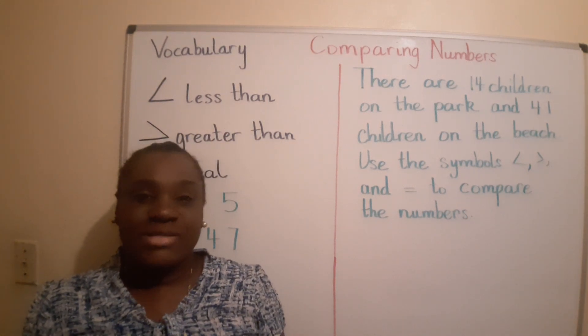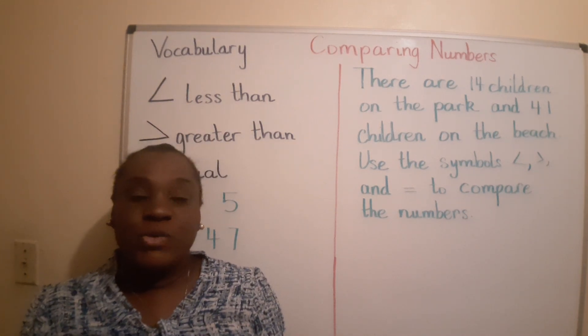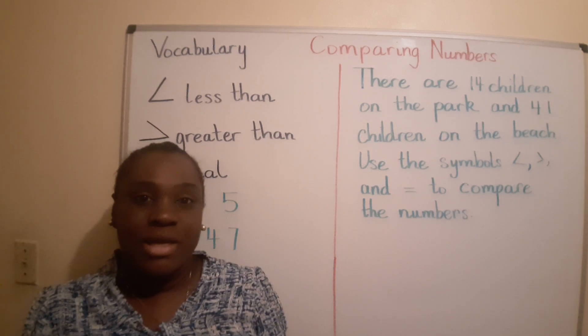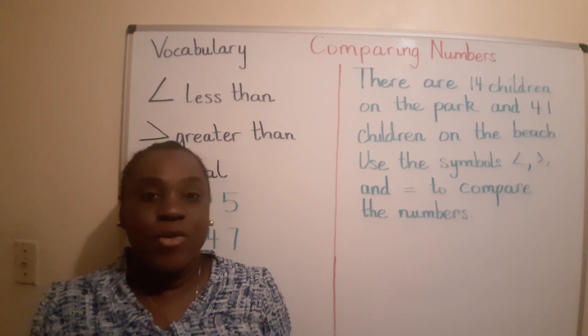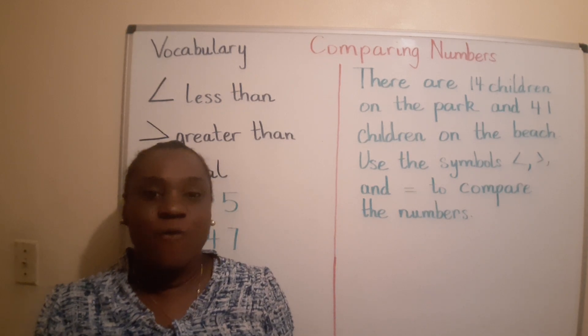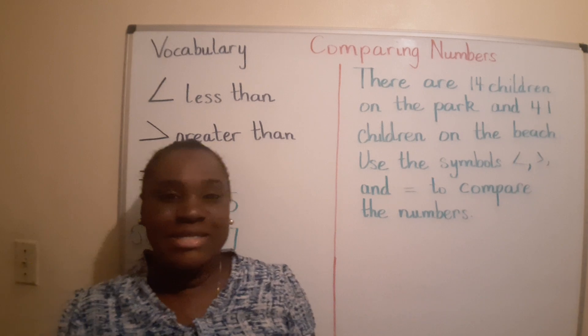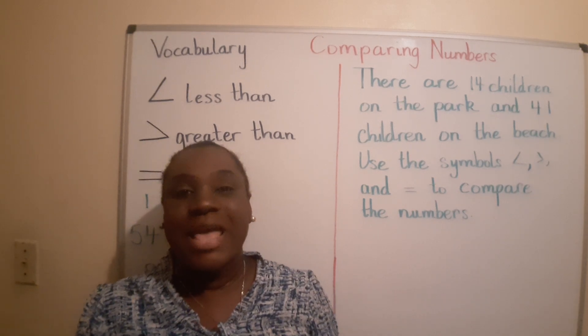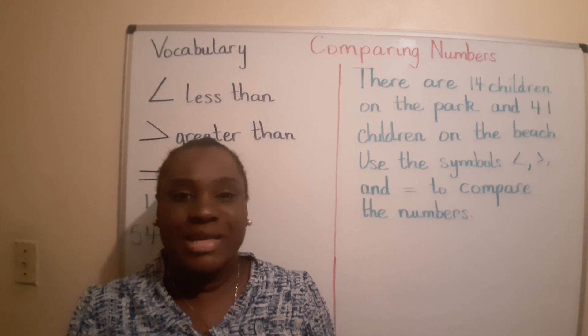But before we get started, we're going to do some drills. Let's count to 20 in twos starting with 0. 0, 2, 4, 6, 8, 10, 12, 14, 16, 18, 20. Excellent.